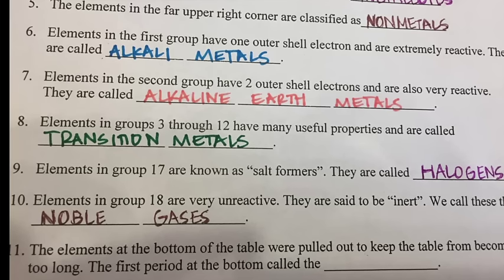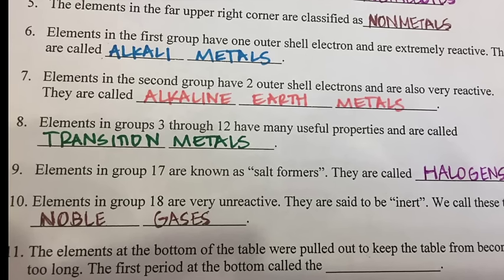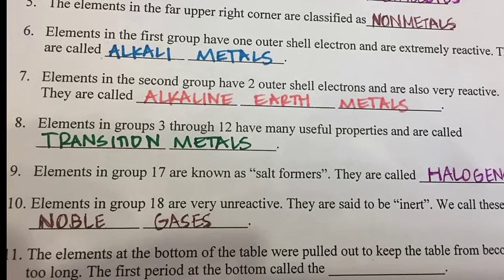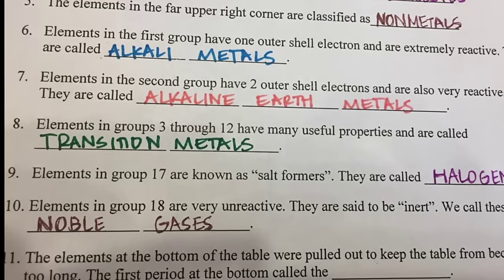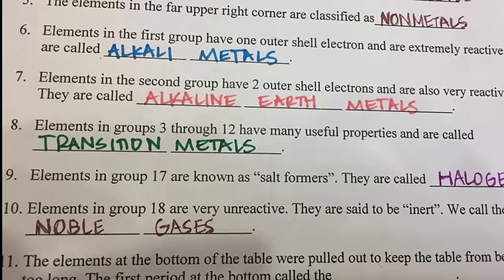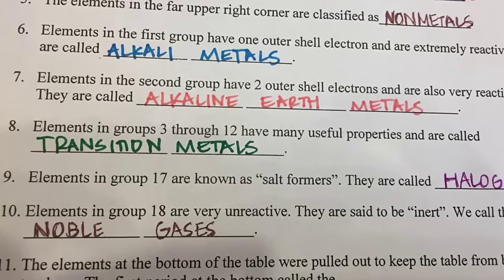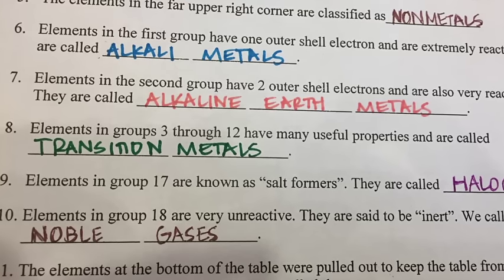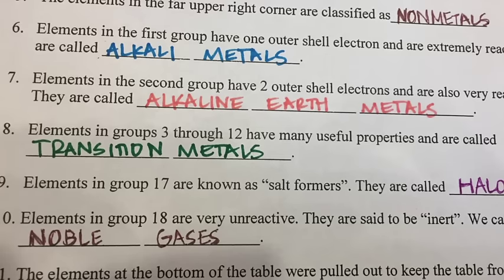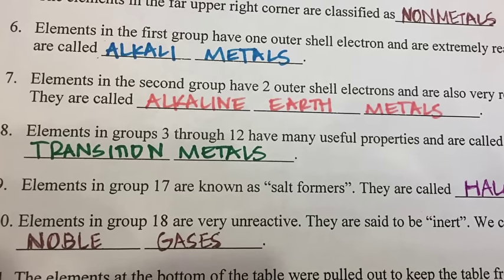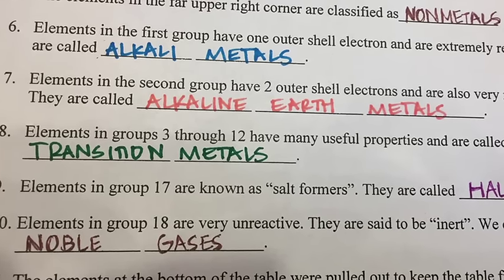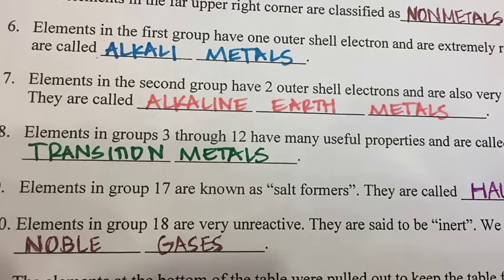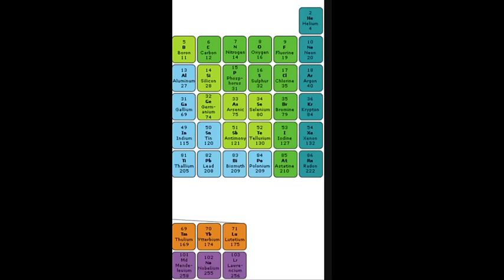The elements in group eighteen, the very last column, are very unreactive and are said to be inert, which means they do not like to react with any other elements. We call these the noble gases. They are all colorless, odorless gases at room temperature, and they are all found in Earth's atmosphere in small amounts. They consist of helium, neon, argon, krypton, xenon, and radon.